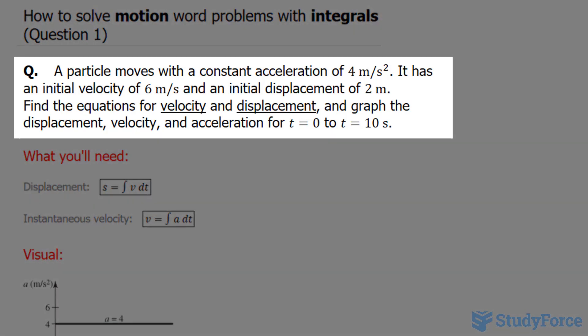The question reads: A particle moves with a constant acceleration of 4 meters per second squared. It has an initial velocity of 6 meters per second and an initial displacement of 2 meters. Find the equations for velocity and displacement and then graph the displacement, velocity, and acceleration for time equal to 0 to time equal to 10 seconds.